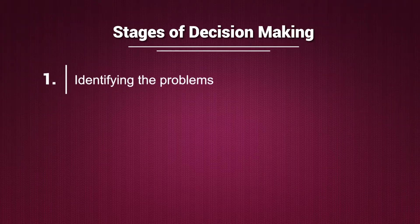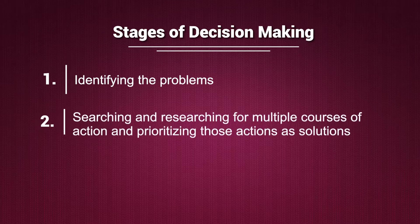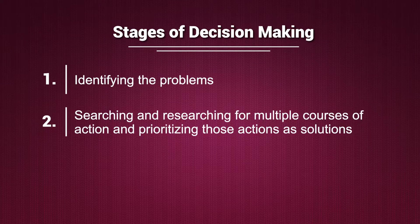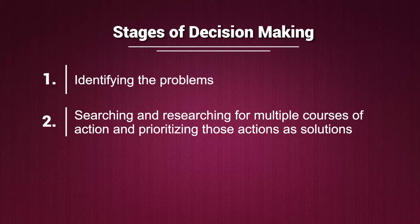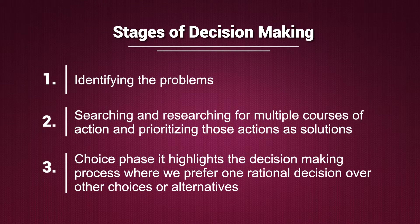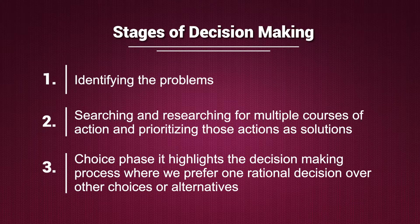So this entire decision making process as elaborated by Herbert Simon identified three important stages: one, identifying the problems; second, searching and researching for multiple courses of action and prioritizing those actions as solutions; and third, the choice phase, which highlights preferring one rational decision over other choices or alternatives.